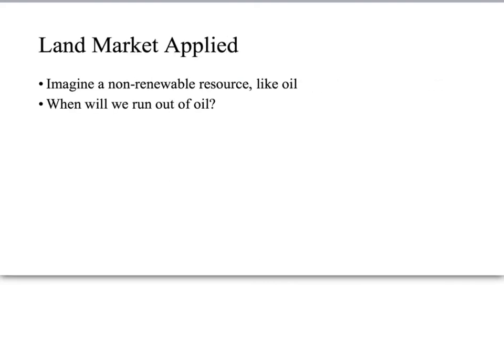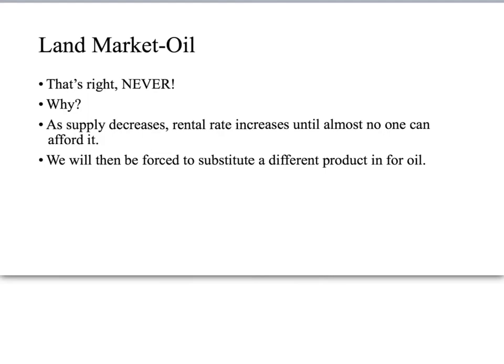As an application of the land market, imagine a non-renewable resource like oil. When will we run out of oil? Economists and business people have often argued about this — some say 20, some say 50 years. But if we think graphically, the answer is never, because there's a market for oil. As the supply decreases, the rental rate increases until almost no one can afford it, and people will be forced to substitute a different product for oil, like natural gas or electricity. So the supply of oil will continue to diminish and the supply curve will continue to shift left.